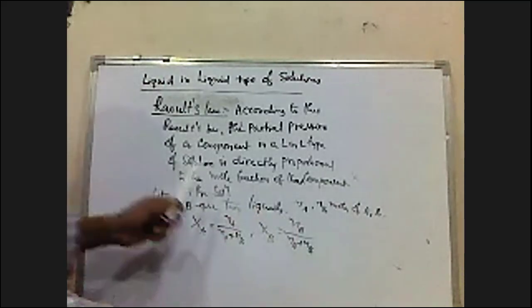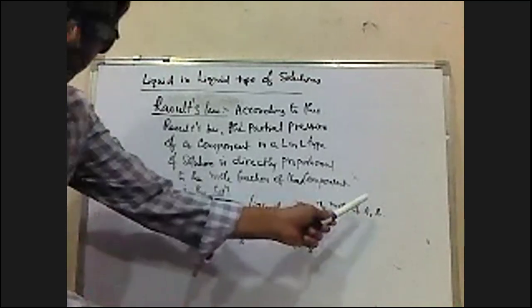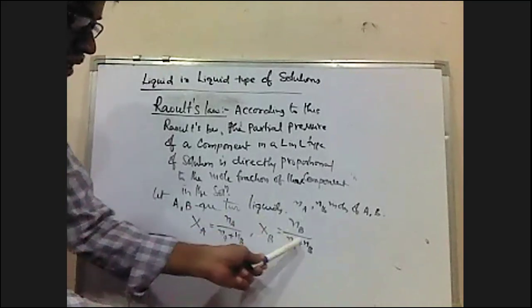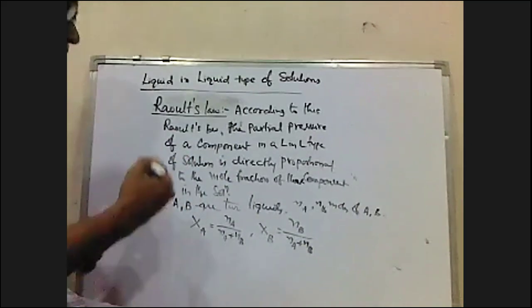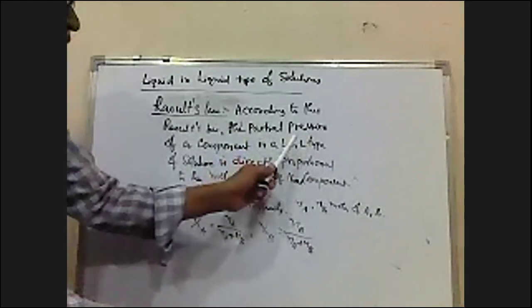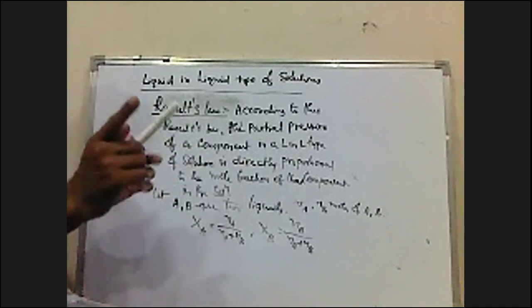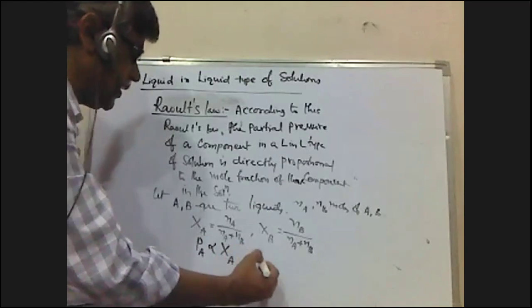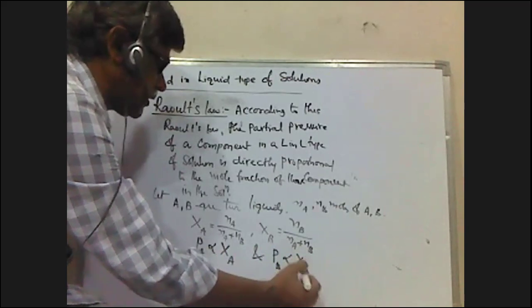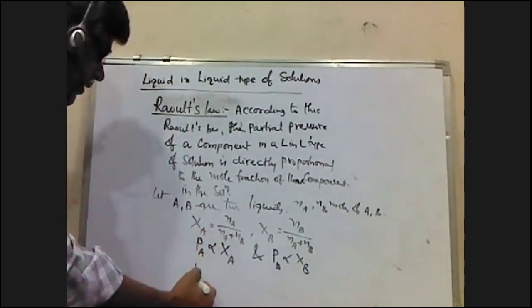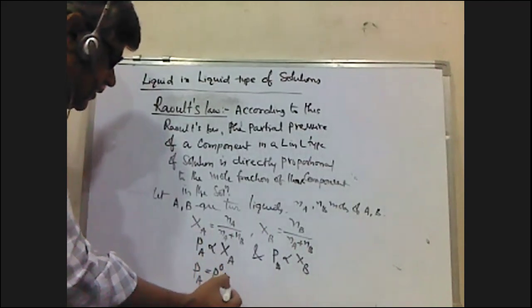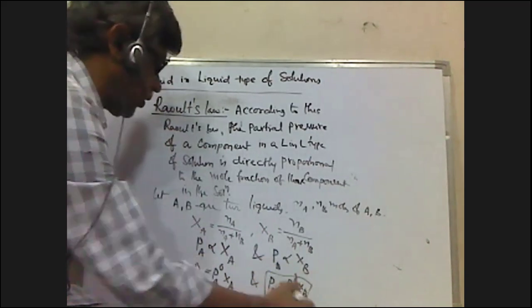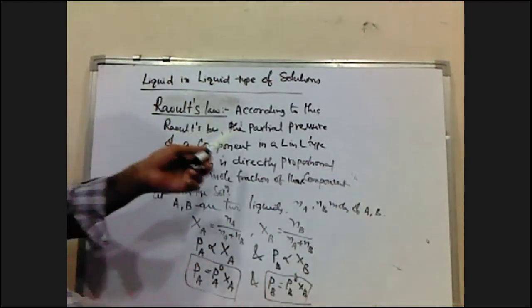According to Raoult's law, I have assumed two liquids A and B. I have taken NA moles of A and NB moles of B. The mole fraction of A is XA = NA / (NA + NB), and similarly XB = NB / (NA + NB). Now, the partial pressure of A in the solution is directly proportional to XA, and removing the proportionality constant: PA = PA0 × XA. Similarly, PB = PB0 × XB. This is Raoult's law for liquid-in-liquid type of solutions.